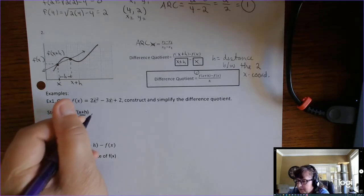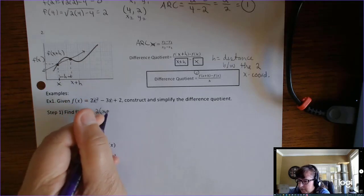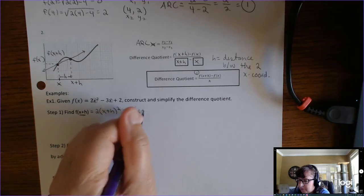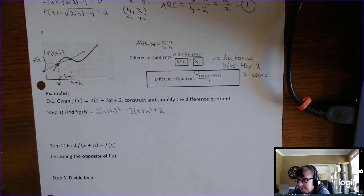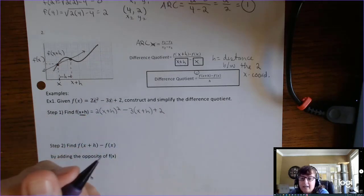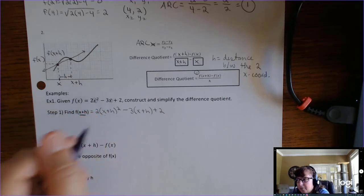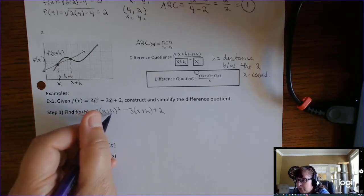Finding f of x plus h means we'll have 2 times x plus h quantity squared, minus 3 times x plus h, plus 2. There's that binomial squared that you're going to see a lot — just about every lesson from here on out. It's a good idea to know the shortcut for squaring a binomial, which we call square-double-square.